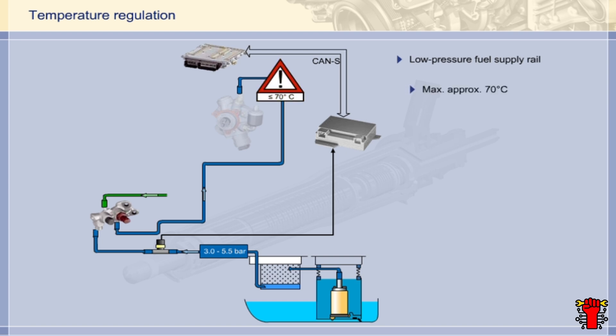Fuel temperature at the inlet to the high-pressure pump may not exceed around 70 degrees centigrade. The temperature is monitored by the ME control unit with the aid of the fuel temperature sensor. This is incorporated into the low-pressure fuel supply rail. A fuel cooler is incorporated into the return line to lower the fuel temperature.